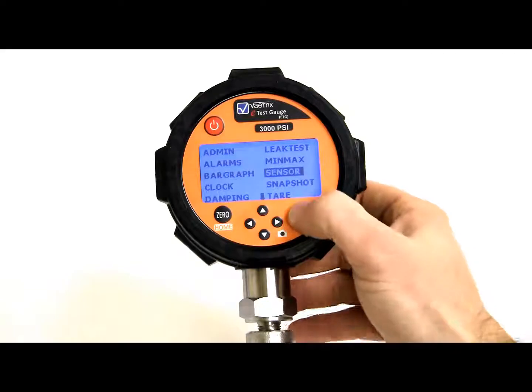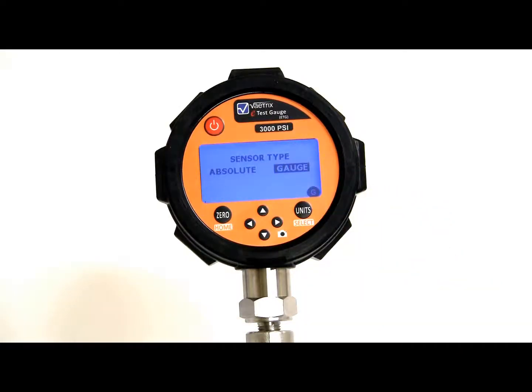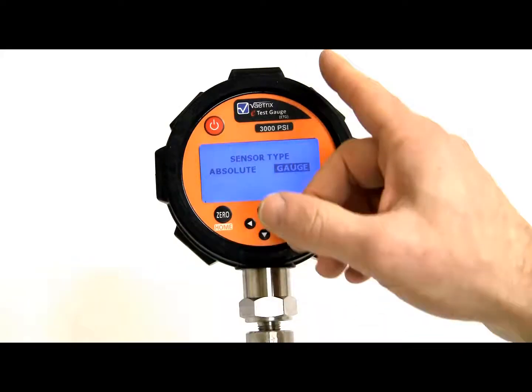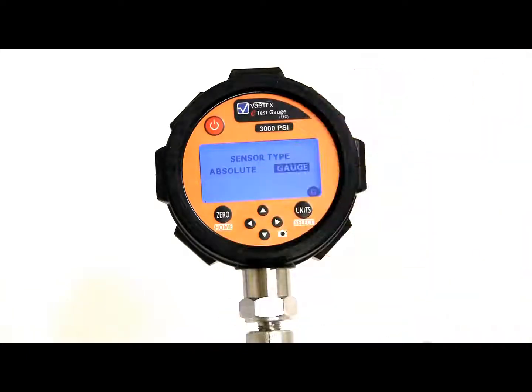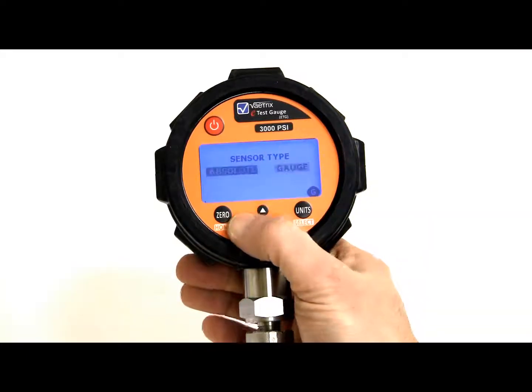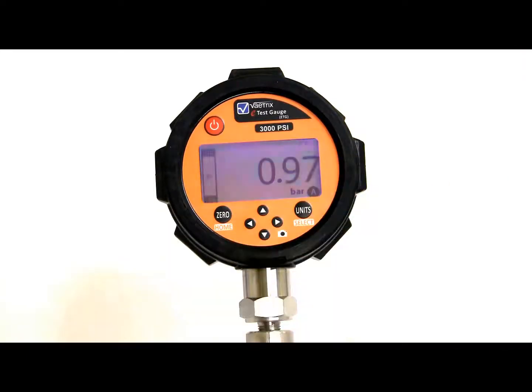Sensor. So a unique feature on the ETG is the ability to measure not only gauge or whatever range you selected, you can select absolute, which puts you in absolute mode. So right now I have an alarm set, and I'll cover that in a little bit, but it's in absolute mode, we're in bar absolute.